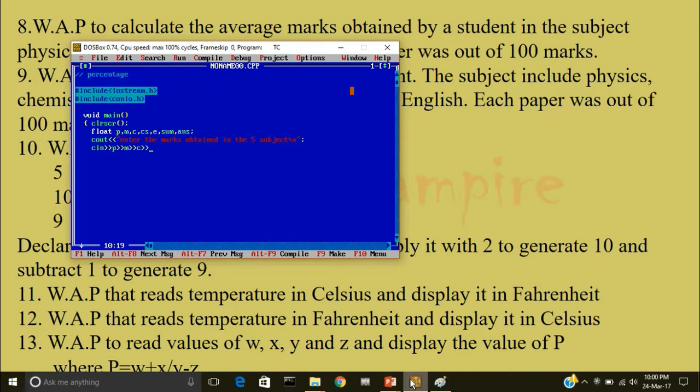Greater than greater than then CS, E. Now I'll find the sum of marks obtained all in the 5 subjects. Sum is equal to P plus M plus C plus CS plus E.